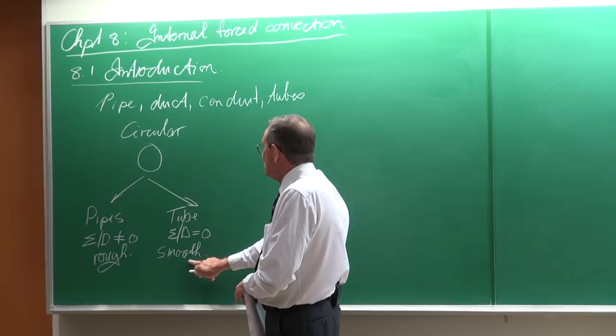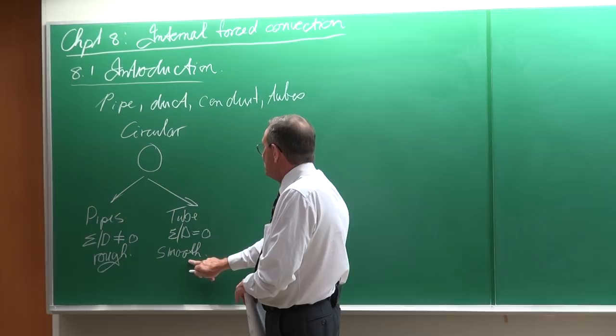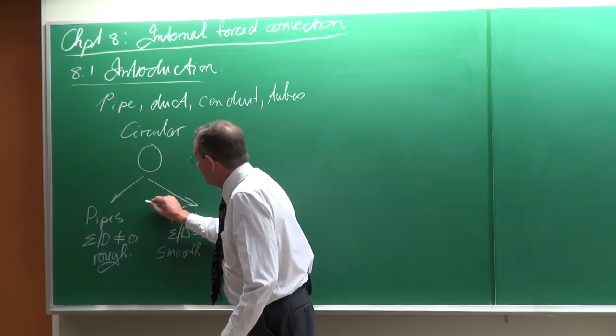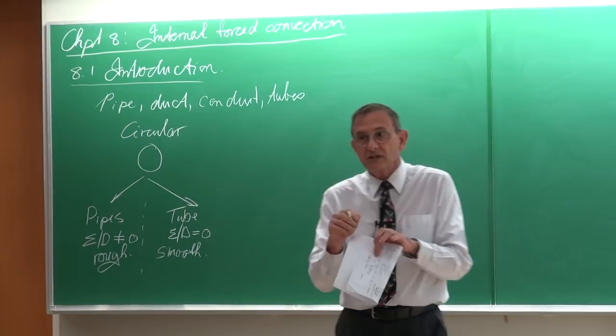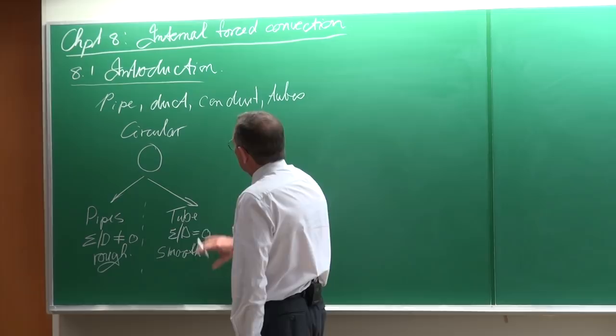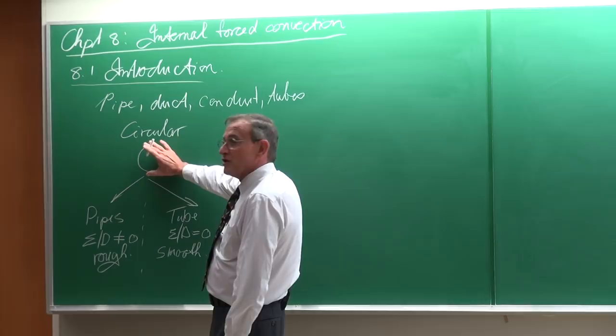Therefore, what you're going to work with in industry are normally tubes. So when do you get pipes? Pipes are actually from the old times when they cast the pipes. They used sand on the inner core, and those were very rough, and therefore they are actually pipes. A tube can also change to a pipe because of corrosion, scaling, or other types of effects.